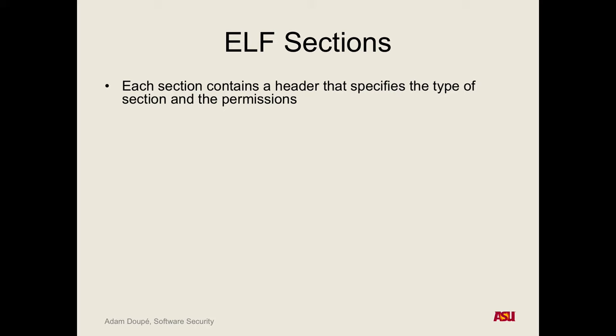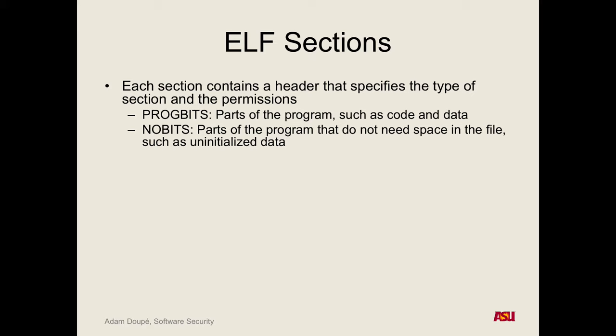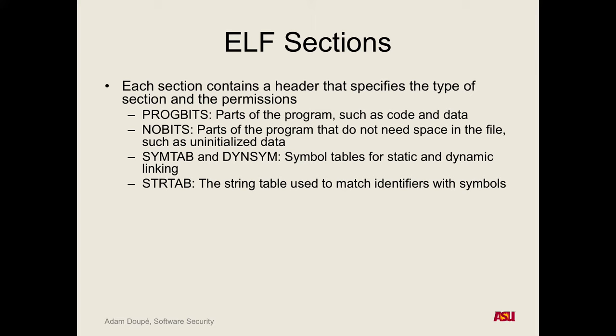Each section defines what type of section it is and the permissions on it. There are bits that tell you: is this data or is this code? Some sections actually have no parts in the file. For example, if we want to pre-allocate a gigabyte of memory in our program space, we don't want a gig of zeros in our program file — we can say at this memory location, allocate a gig of memory, but that doesn't actually exist in the file. We have symbol tables for static and dynamic linking, string tables, and relocation tables.